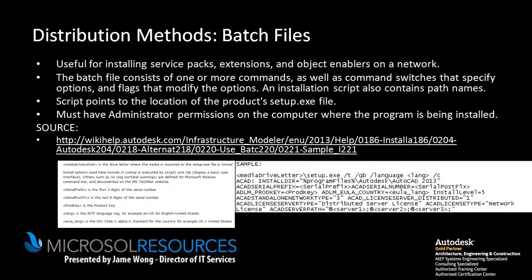Now that we've packaged the deployment image, let's talk about distribution methods. The first is batch files, which are basic scripts for installation of software, service packs, and extensions. They include commands, switches, options, and flags that control the behavior of the installation. Only users with administrative permissions can run batch files.